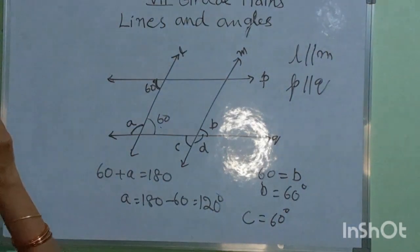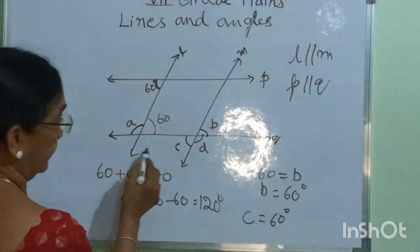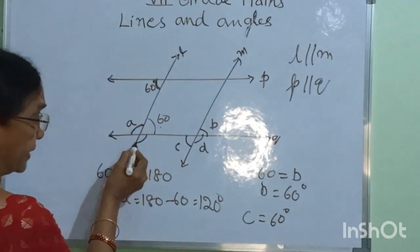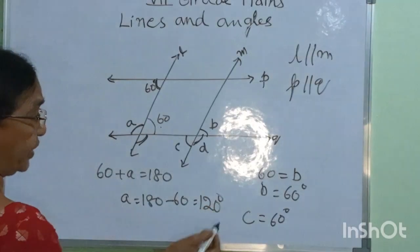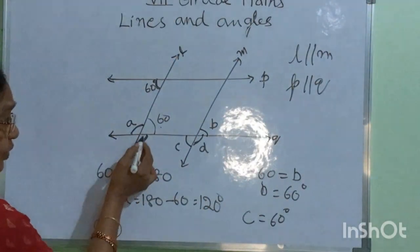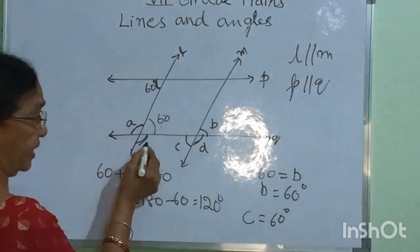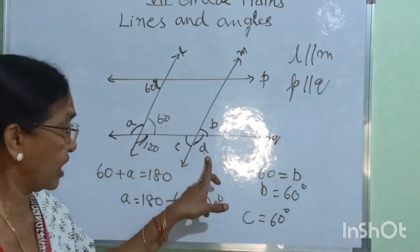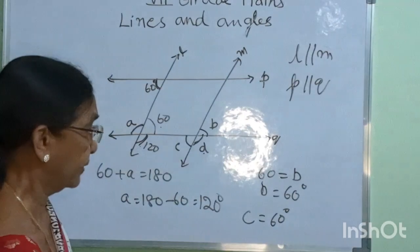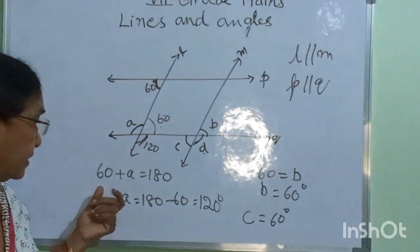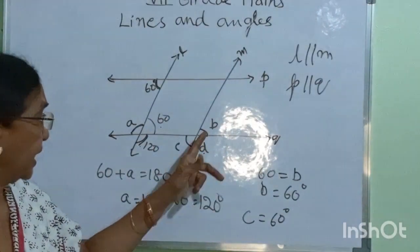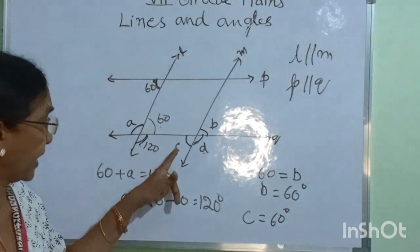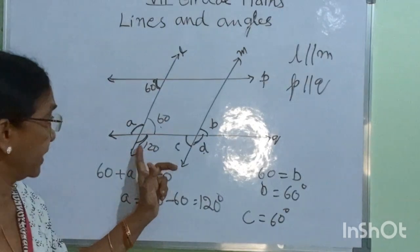For lines L and M as parallel lines, D and this angle are corresponding angles. Corresponding angles are equal. As this angle is 120 degrees, D is also equal to 120 degrees. Thus we can find all the angles: A is equal to 120 degrees, B is equal to 60 degrees — corresponding angle — C is equal to 60 degrees — alternate interior angles — and D is equal to 120 degrees — corresponding angles.